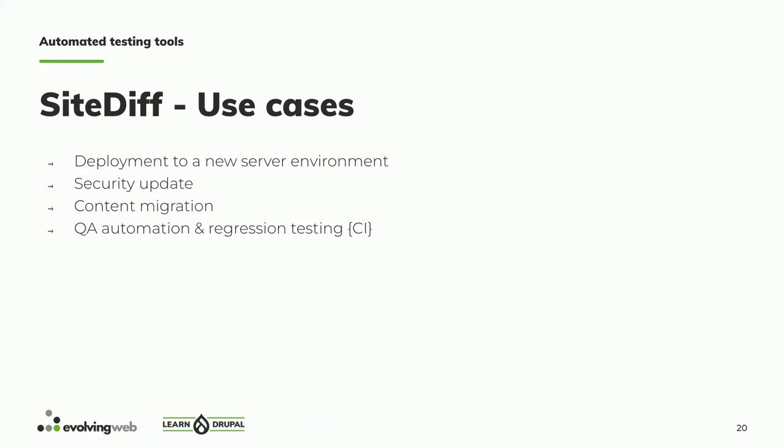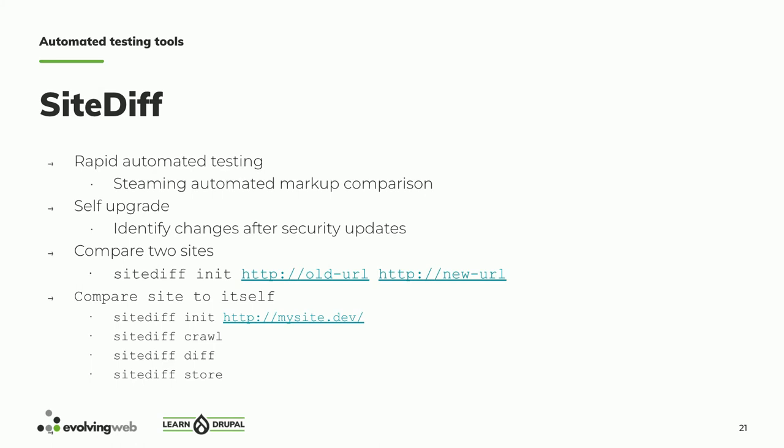For the use case of comparing two sites, you run 'sitediff init' — it's a command line tool — with the old URL and the new URL, and it generates the report. Another scenario is working on a dev site in place: 'sitediff init' does an initial crawl, 'sitediff crawl' downloads all the pages, and 'sitediff diff' generates the report. If you change the site and want to iterate again after another security update, you rerun the crawl with 'sitediff store'. It also caches the stable version to speed up subsequent crawls.